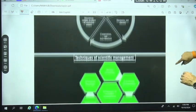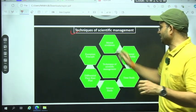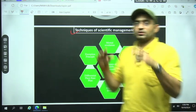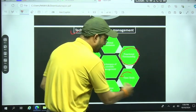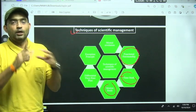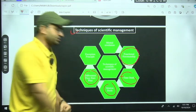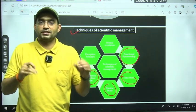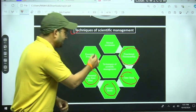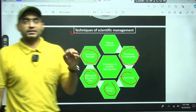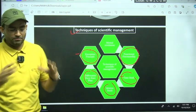Again, Taylor was not only giving theories, including with that, he proposed techniques. He said that functional foremanship where one worker will be controlled and guided by 8 foremen, which will increase his efficiency. Bring time study, motion study, so that work efficiency can be promoted, productivity can be increased. Bring differential piece rate system, so that payment can be exercised. It will be piece payment, which will keep workers motivated. Again, bring exceptional principle. Management should interfere in workers' work only when work is not being executed properly. So with all these principles,